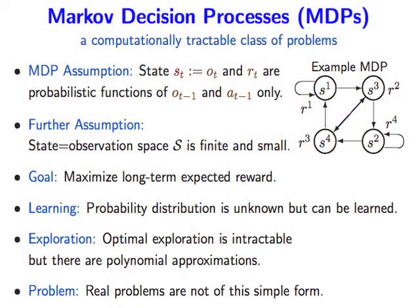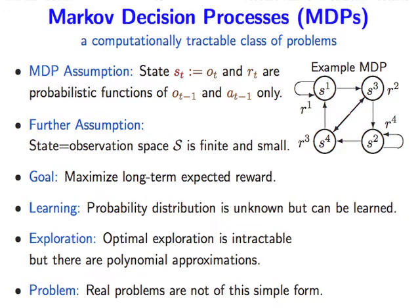The goal is again to maximize long-term expected reward. Since you don't know the probability distribution you have to learn it. The difficult thing is exploration, and doing it optimally is computationally intractable. But there are recent polynomial-time algorithms dealing with this problem — the most recent from Andreas Lorenz and his student, an ICML 2008 paper. He told me it's now also solved for DBNs.